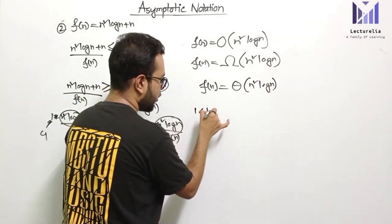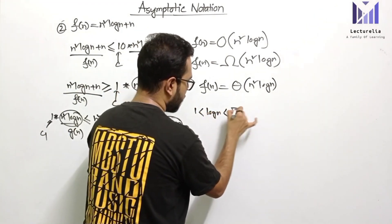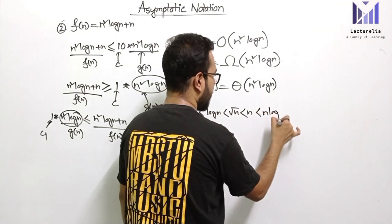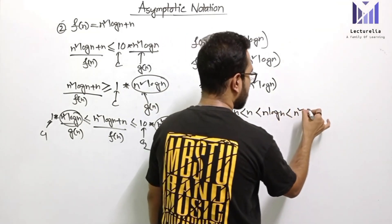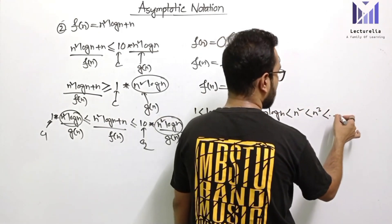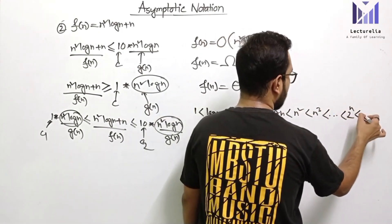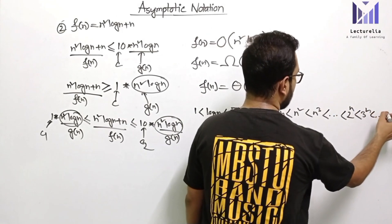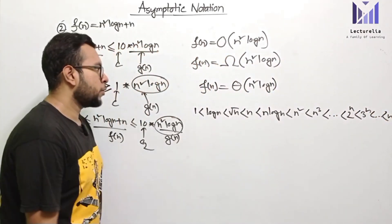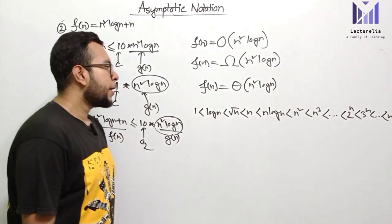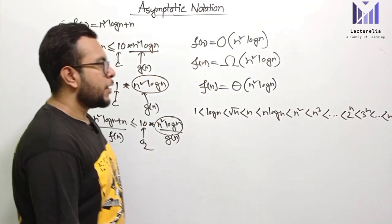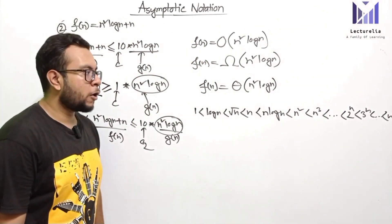For comparison of functions: 1 is greater than log n is greater than root n is greater than n log n is greater than n² is greater than n³, which is greater than 2 to the power n, and n to the power n. We can see the comparison of functions — exactly which class n² log n belongs to.